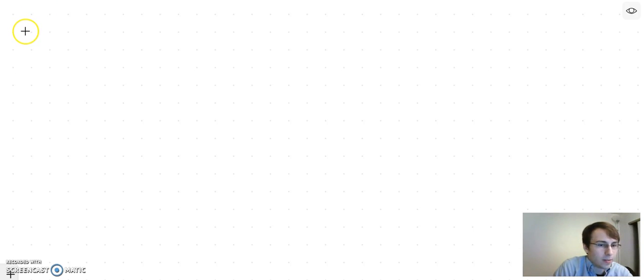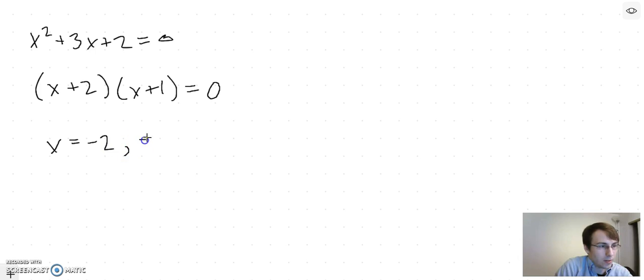All right, so we know how to factor quadratic equations. The advantage of that is we can see the solutions right off the bat if we can factor. Like we've got x squared plus 3x plus 2 equals 0. Well that's clearly x plus 2 times x plus 1, so either x equals negative 2 or x equals negative 1. But what if we change it up a bit?